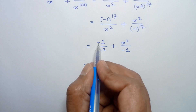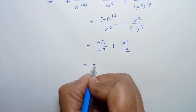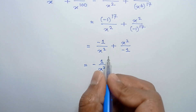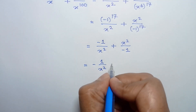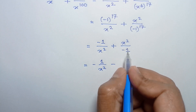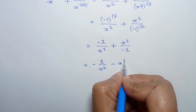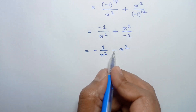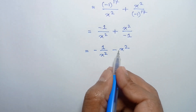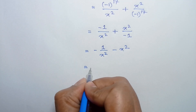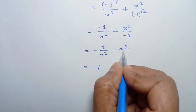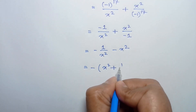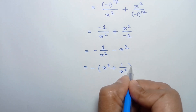This simplifies to negative 1 over x squared minus x squared. Taking out the common factor negative 1 and rearranging, we can write it as negative of x squared plus 1 over x squared.